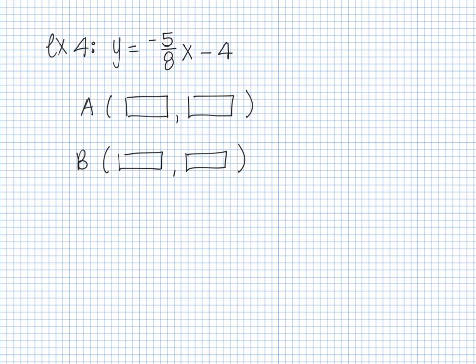The last example: y equals negative 5 eighths x minus 4. They're asking me to find two points and graph it. Your first point is always zero, and the second point is the denominator. This equation is already solved for y, so I don't have to do any solving — I go straight to picking the x values: zero and eight.